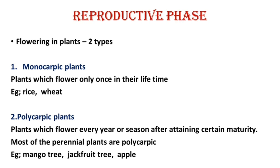There are also unusual flowering phenomena. For example, bamboo flowers only once in its lifetime, generally after 50 to 100 years, and then produces a large number of flowers and dies.